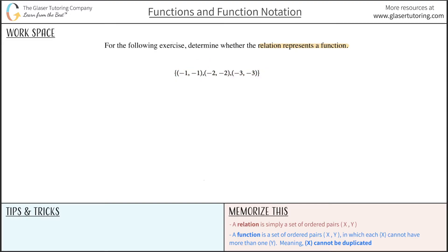But now we have to determine whether this relation represents a function. A function is a set of ordered pairs (x, y), meaning a function is a type of relation in which each x cannot have more than one y. In other words, x cannot be duplicated.